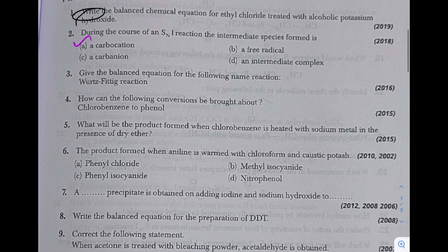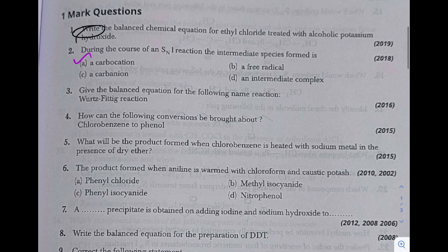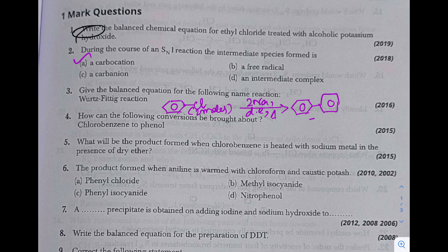Next, give the balanced equation for the following named reaction: Wurtz-Fittig. So chlorobenzene, two moles, as balanced equation is needed - it reacts with two moles of sodium in presence of dry ether and heat, and it produces biphenyl along with two moles of NaCl. This is the balanced Wurtz-Fittig reaction.